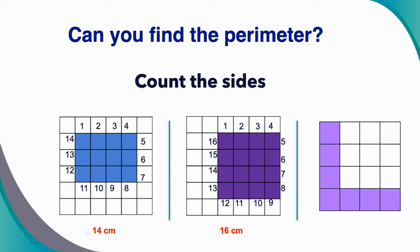Let's look at our last shape. To find the perimeter, we're going to count the sides — each side is one centimeter. Count with me: one, two, three, four, five, six, seven, eight, nine, ten, eleven, twelve, thirteen, fourteen, fifteen, sixteen — so this shape has a perimeter of 16 centimeters.